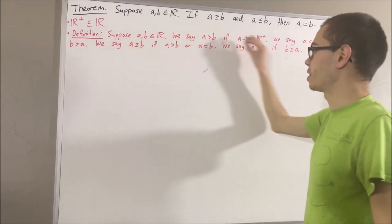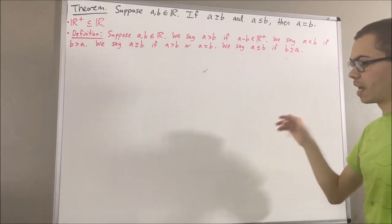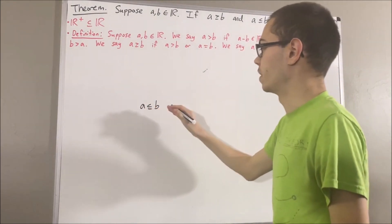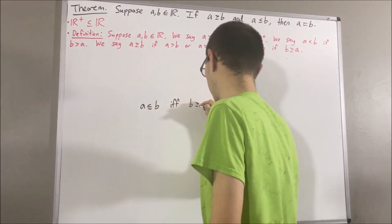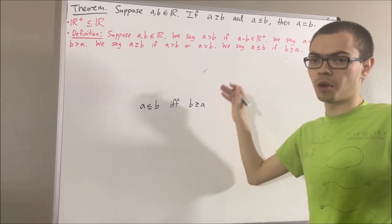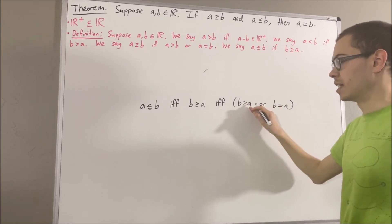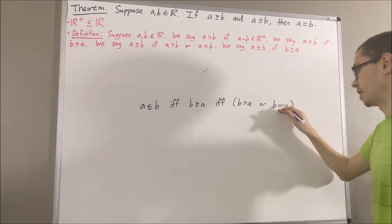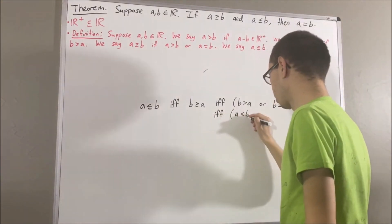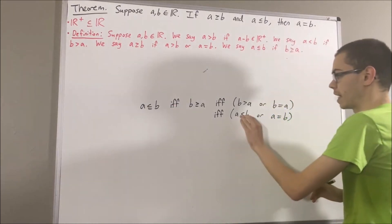Now, a consequence that immediately follows from these definitions is: to say a is less than or equal to b is equivalent to saying a is less than b or a is equal to b. To see how: by definition of less than or equal to, saying a is less than or equal to b is equivalent to saying b is greater than or equal to a. By definition of greater than or equal to, that is equivalent to saying b is greater than a or b is equal to a. By definition of less than, b is greater than a is equivalent to a is less than b. And of course, b is equal to a is equivalent to a is equal to b. So we have that a is less than or equal to b is equivalent to a is less than b or a is equal to b.